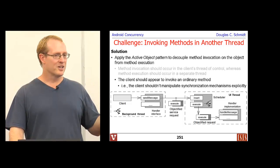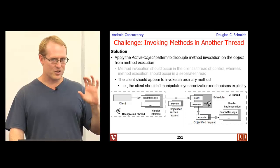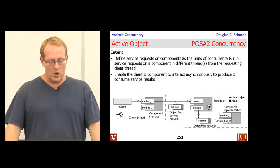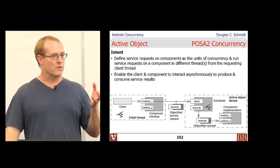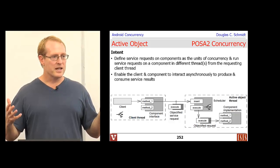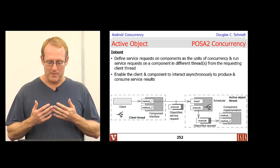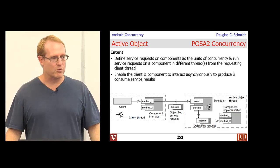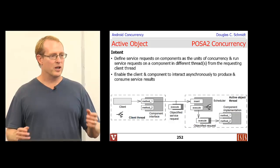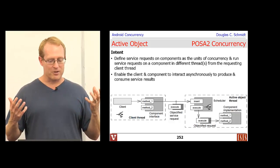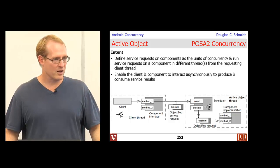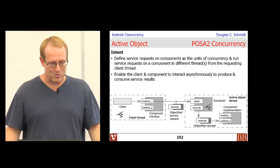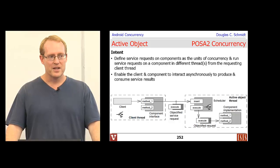In particular, the client doesn't grab any locks, doesn't use condition variables, doesn't do any queuing — it just says sendMessage or invoke operation. The intent of the active object pattern is to define service requests on components or objects and make these the unit of concurrency in the program, run requests for these services in different threads than the requesting client, and enable the client and the component to interact asynchronously to produce and consume results.